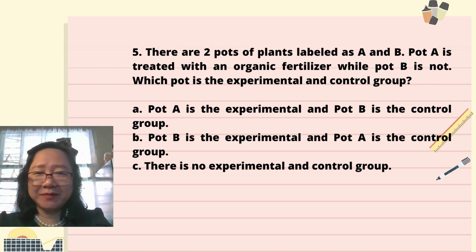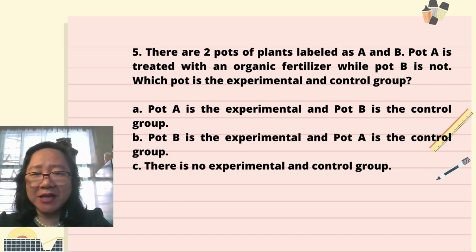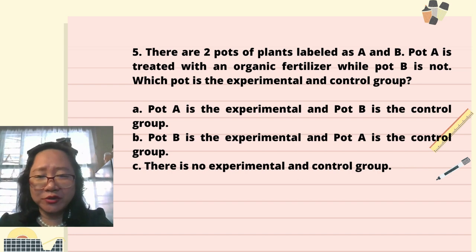Question 5: There are two packs of plants labeled as A and B. Path A is treated with an organic fertilizer, while path B is not. Which path is the experimental and control group? A. Path A is the experimental and path B is the control group. B. Path B is the experimental and path A is the control group. C. There is no experimental and control group.